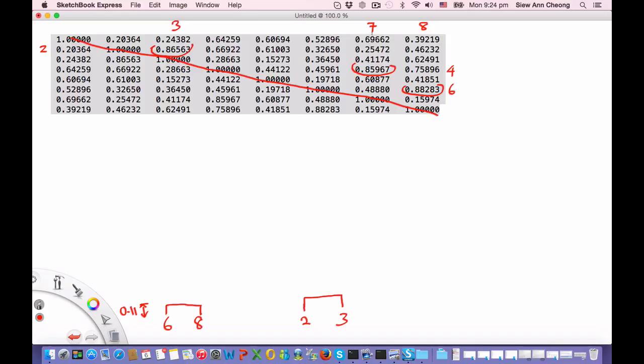The next one that we will draw will be 0.85967 between 4 and 7. And we have seen that this is actually close to 6 and 8. So let's draw it in between. So this is 4 and 7. It is a little bit higher than 2 and 3. Now, what do we do next? So what we do next is we have 2 and 3 and 4 and 6 and 7 and 8. We are missing 1, we are missing 5.